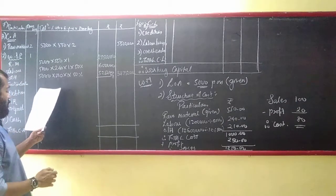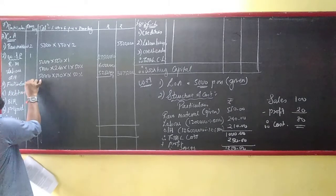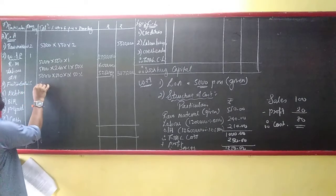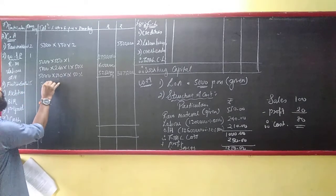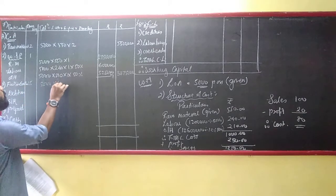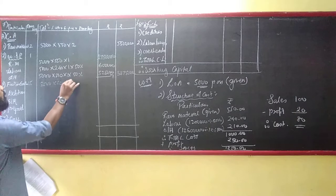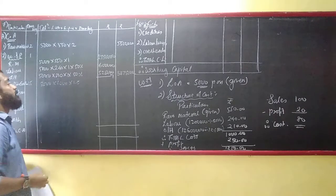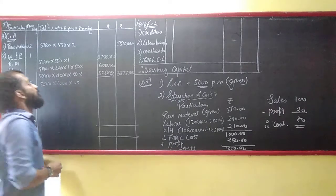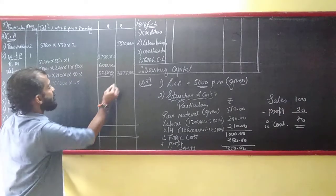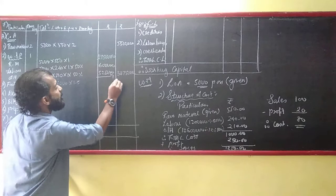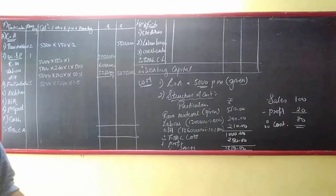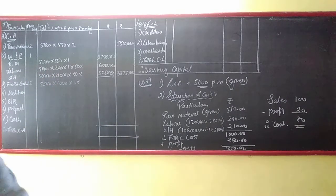For finished goods stock, the holding period is 1.5 months. So: 5,000 × ₹1,000 × 1.5 = ₹75,00,000.